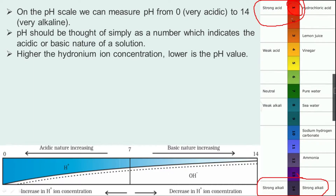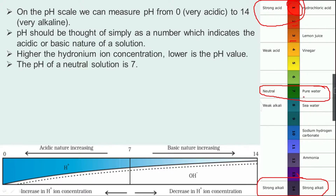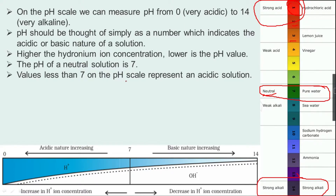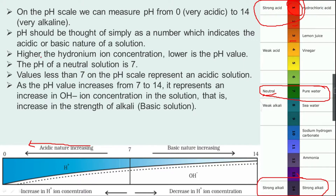As the concentration of hydrogen ions decreases, the pH value increases gradually. The pH of a neutral solution is 7 — pure water has a pH of 7, indicating it is neutral. You must remember that pH of neutral solution is 7. Values less than 7 on the pH scale represent acidic solutions. As the pH value increases from 7 to 14, it represents an increase in OH- concentration in the solution, that is an increase in the strength of the alkali.